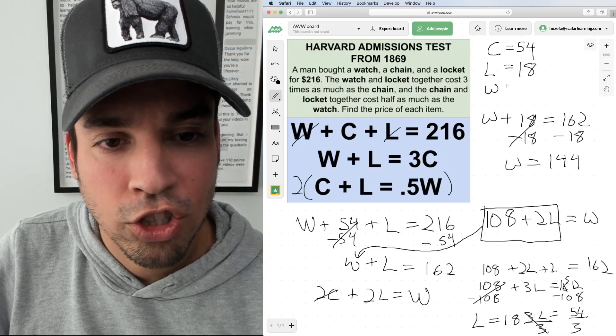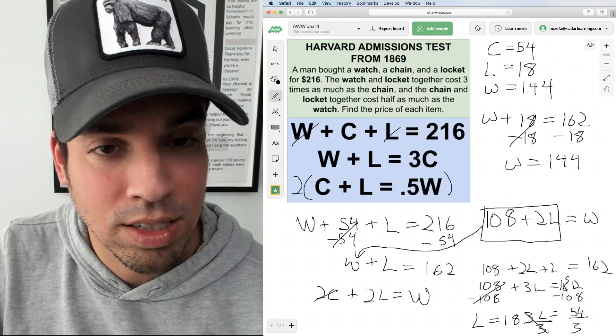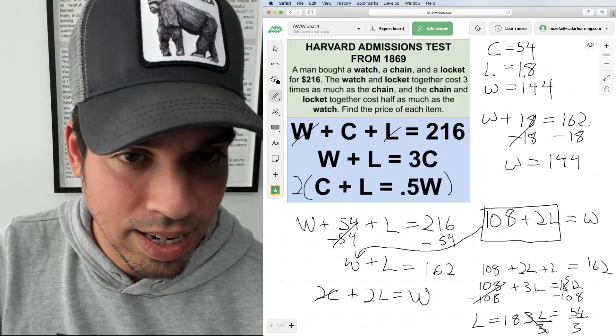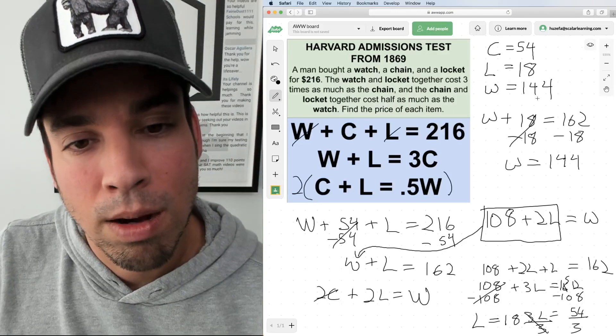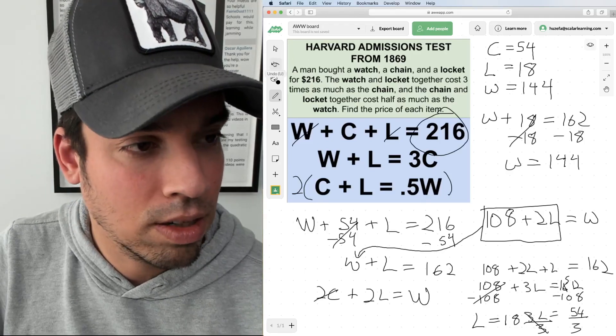Boom, watch equals 144. And there's the answer for this Harvard admissions test. We add these up: 54 plus 18 is 72, plus 144 of course gives us that 216 dollar value which we said in the beginning.